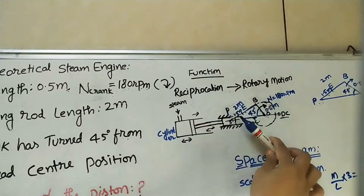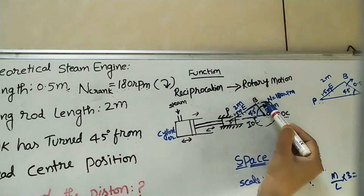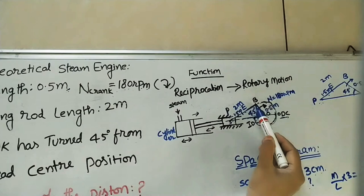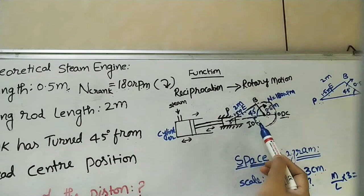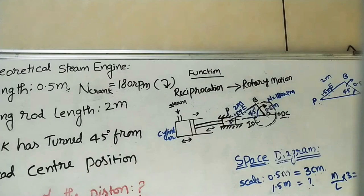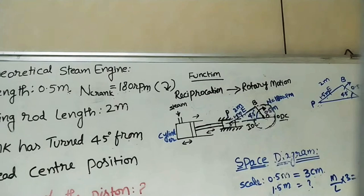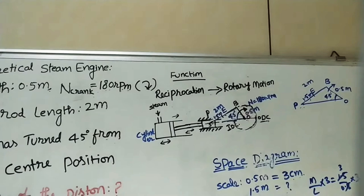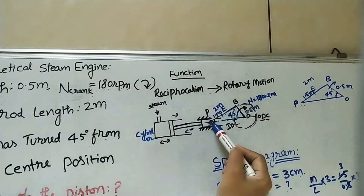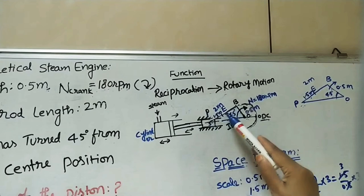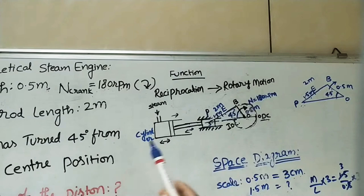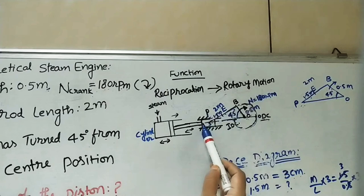The crank is turning clockwise in a circular path. The point we are calling ODC is the outer dead center position — whenever the crank comes here. And when the crank comes to the other side, it is called the inner dead center position. He has given that the crank is making 45 degrees from the inner dead center. So OB position is at 45 degrees. Next, what is the connecting rod length? It is 2 meters. B is the crank end, and BP is the connecting rod — 2 meters. P is the gudgeon pin on the slider, which moves horizontally, so P and O pass through the same axis line.